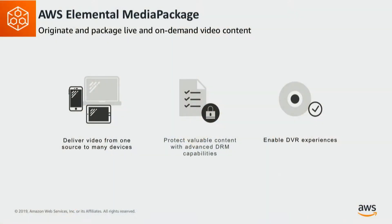What is AWS Elemental Media Package? Media Package is a just-in-time packager — one of the best-in-market packaging solutions available. Media Package enables customers such as content providers and broadcasters to deliver video from one source to many devices. It helps protect your premium content through encryption and DRM capabilities, and also provides advanced video experience features such as DVR or time-delayed TV.